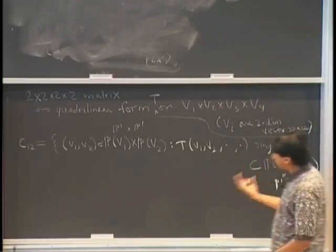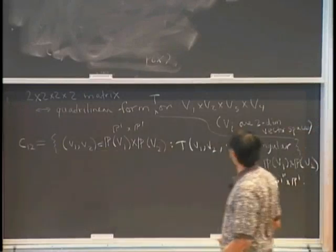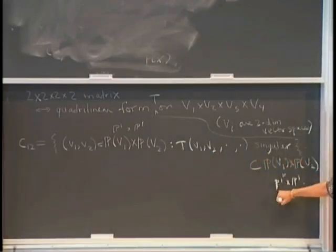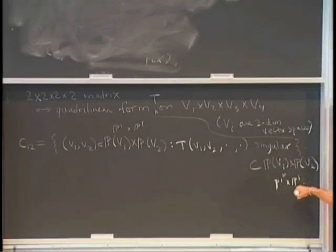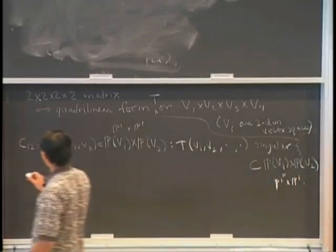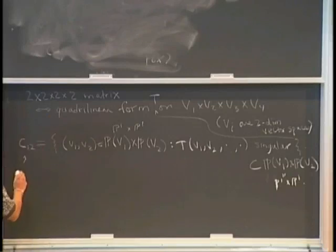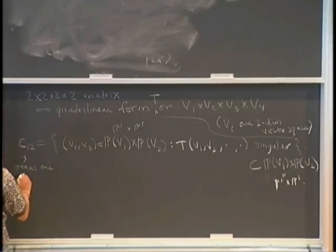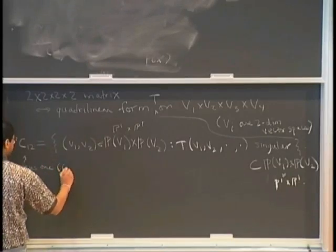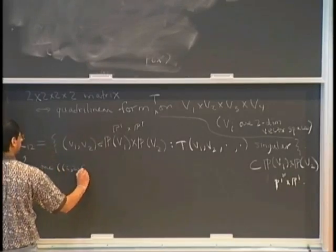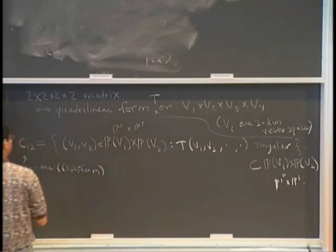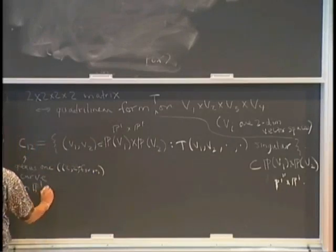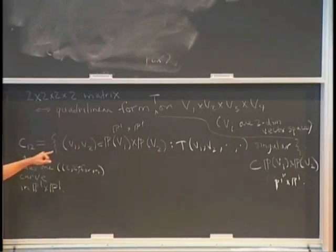So we're taking all the pairs (V1, V2) in V1 cross V2, such that if you plug them into this quadrilinear form, the bilinear form you have left over is singular — it has determinant zero. If you think about the equations for this curve, it's a 2-2 form on P1 cross P1, so it gives you a genus 1 curve. So C_{12} is a genus 1 curve for a generic T. It's a bi-degree (2,2) form, so it gives you a genus 1 curve in P1 cross P1. That's the way a hypercube gives you a genus 1 curve.